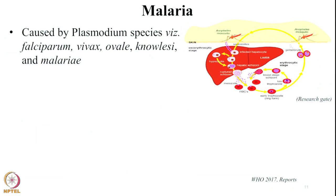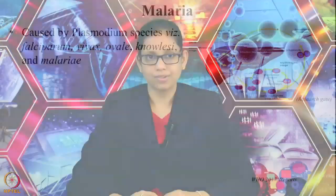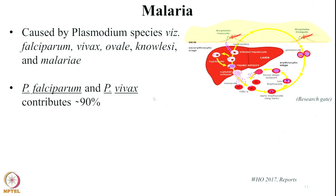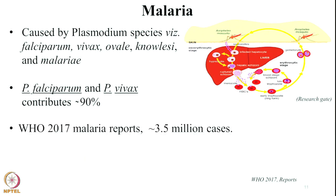Now I would like to take you towards Plasmodium vivax and why this particular parasite is very important to study. Plasmodium vivax is a parasite which causes malaria and has a life cycle that includes two hosts — one is mosquito and the other is human. Malaria can be caused by 5 major parasites: falciparum, vivax, ovale, knowlesi, and malariae. Out of these five, Plasmodium vivax contributes to 90% of malaria cases across the world, and according to the WHO 2017 malaria report, approximately 3.5 million cases were reported.